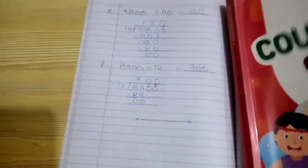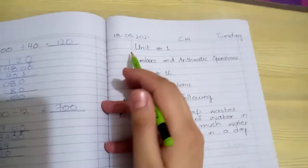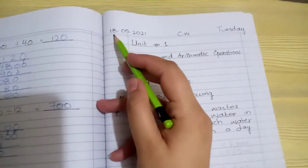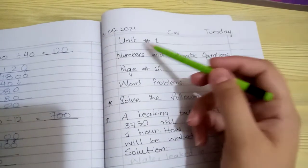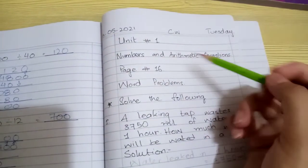Let's take out the notebook and prepare the page. First draw margin lines, then write date 18/5/2021, classwork, Tuesday. Unit number 1: Numbers and Arithmetic Operations, page number 16, word problems. Solve the following.